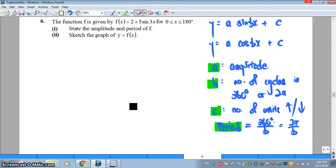What does B tell us? B is the coefficient of x. It allows us to know the number of complete cycles in 360 degrees or 2 pi.